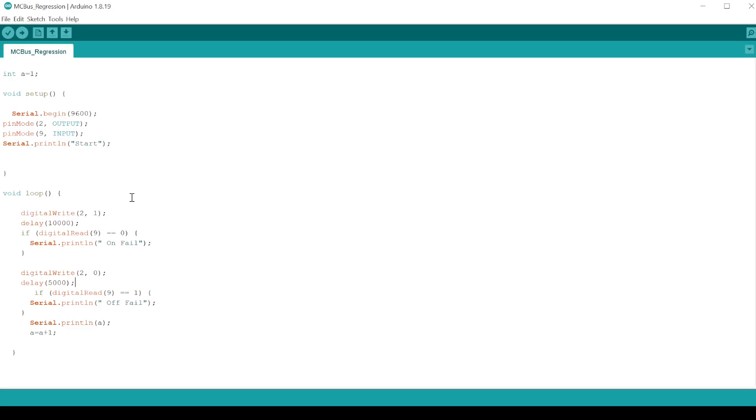In the code, this digital write here turns on the amp, or it should do anyway. And then after 10 seconds, what we're going to do is read that logic line and it should be logic one. If the amplifier is on, it should be logic one. If it's a logic zero, then we're going to say that's a failure to turn on.